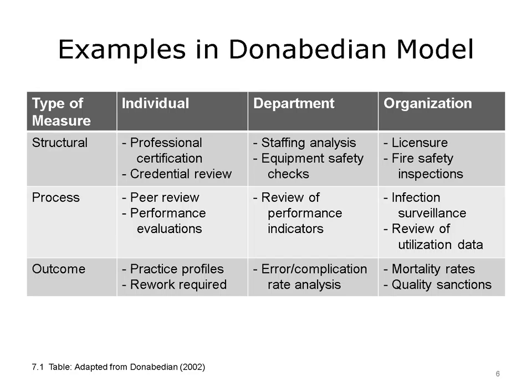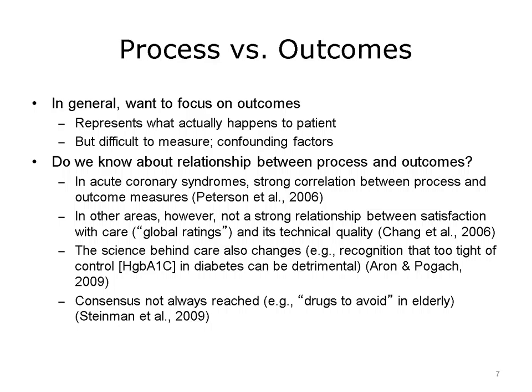Outcomes measure results — do patients do better on the basis of the care they receive? Do they achieve better health? It's important to measure things like practice profiles of individuals, errors at departmental levels, and mortality rates and quality sanctions at organizational levels. In looking at process versus outcomes, many quality measures are actually measuring process, or how care was provided. But the goal is to measure outcomes — how patients respond to care, how their health improves, or how their safety is increased.